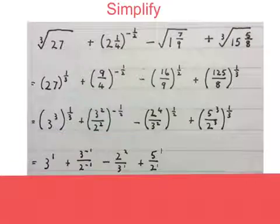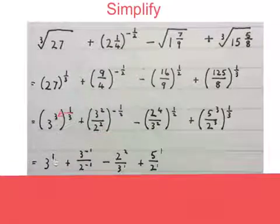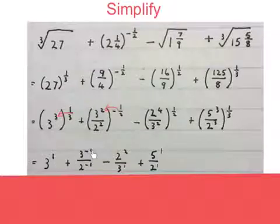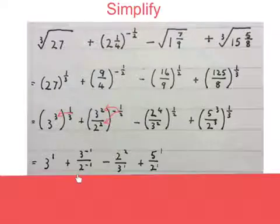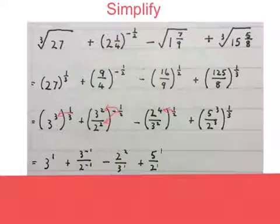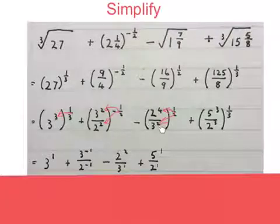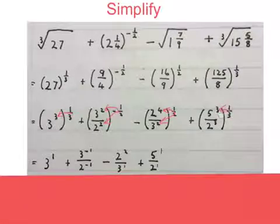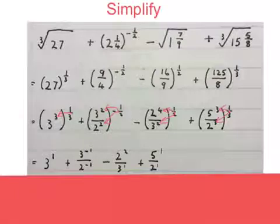Again, using exponent law 3, I multiply that third by that 3 in the exponent and I get 3 to the power of 1. Multiply that minus a half by that 2, I get 3 to the power of minus 1. Multiply that minus a half by a 2, I get 2 to the power of minus 1. Multiply that half by a 4, I get 2 to the power of 2. Multiply that half by that 2 and I get 3 to the power of 1. Multiply that third by that 3, I get 5 to the power of 1. Multiply that third by that 3, I get 2 to the power of 1.